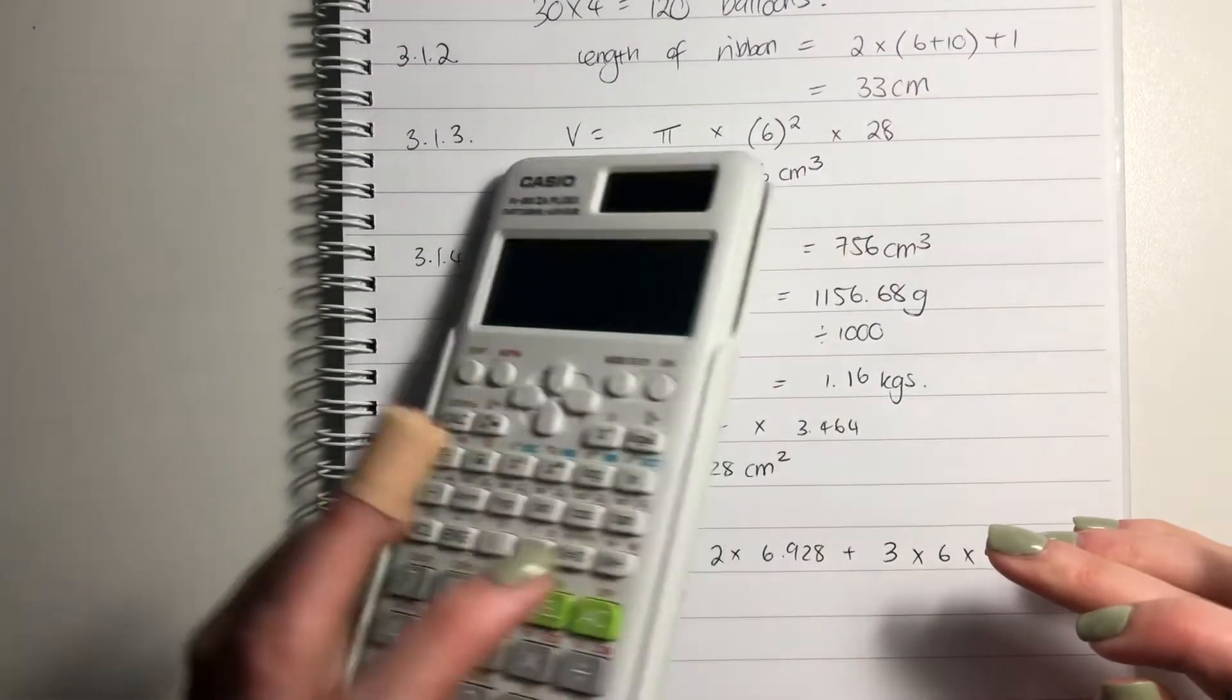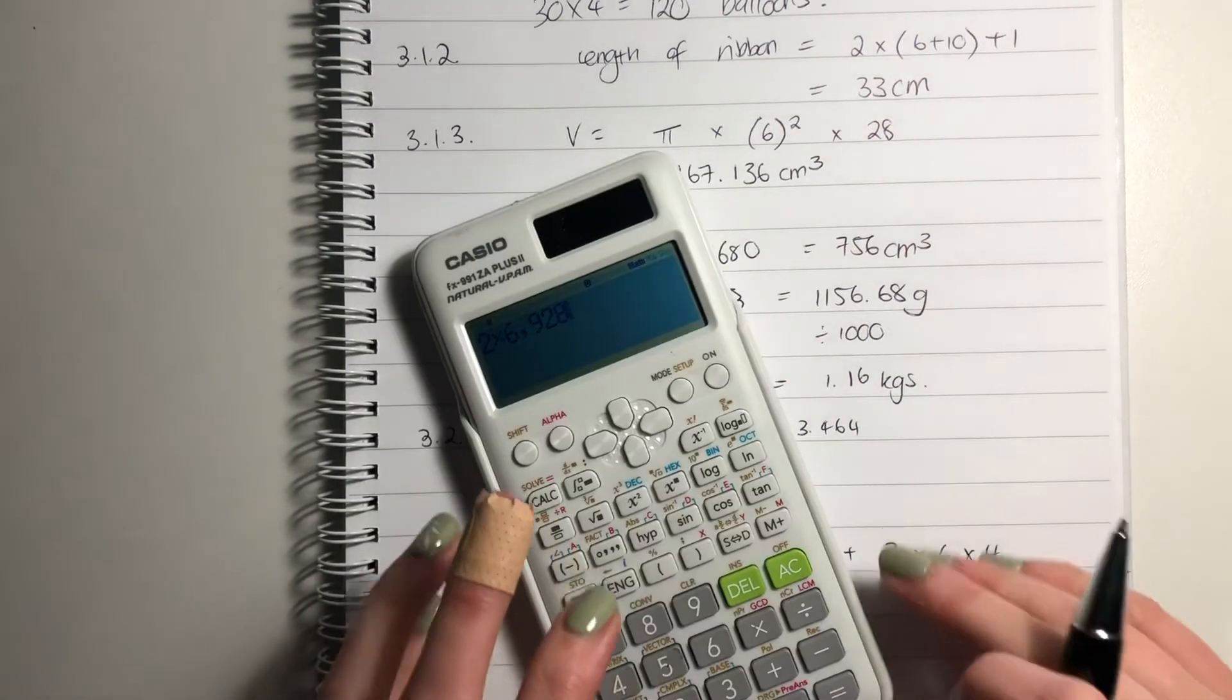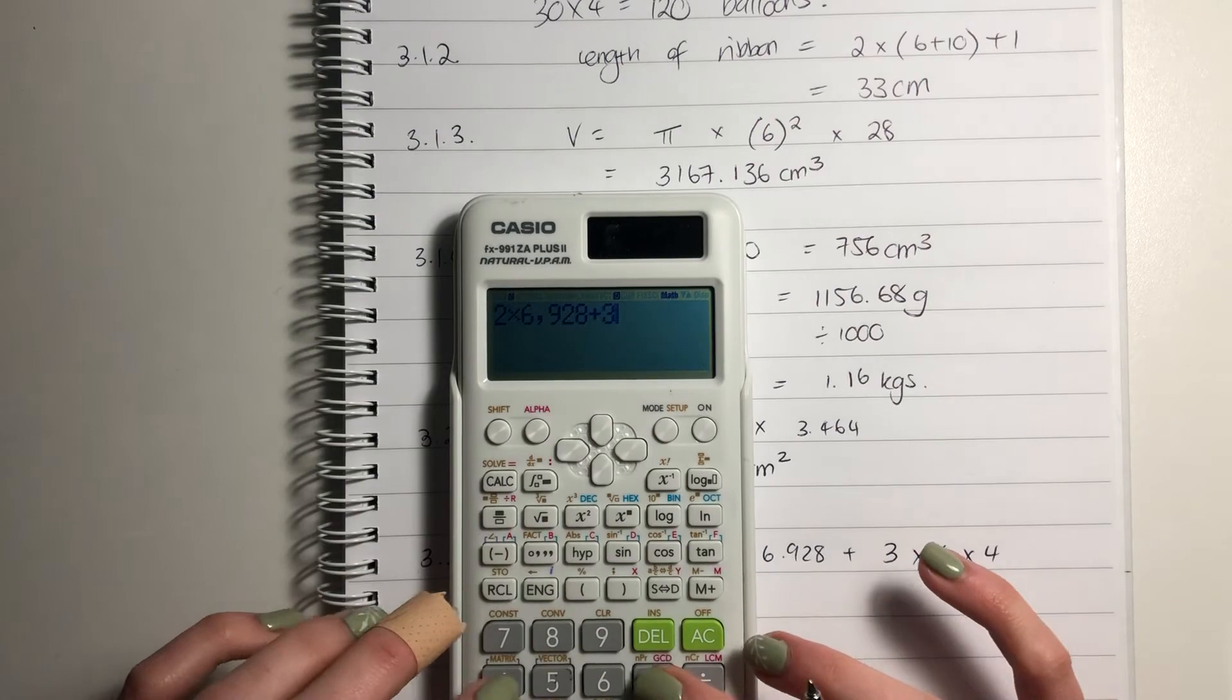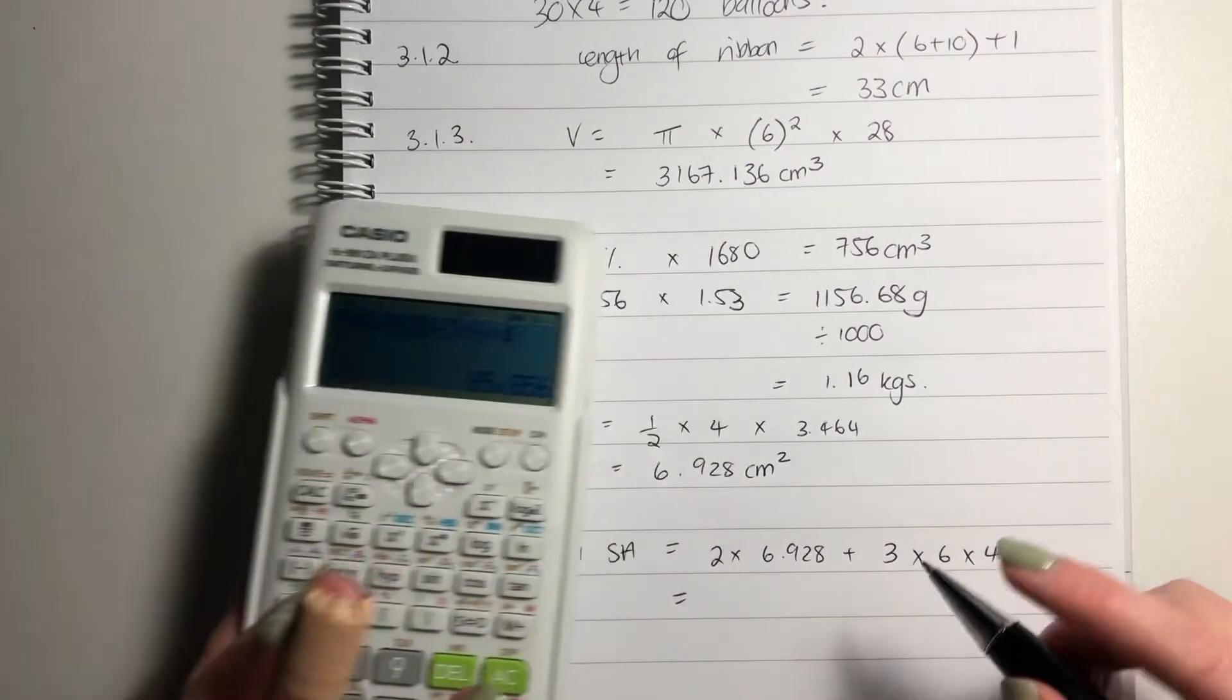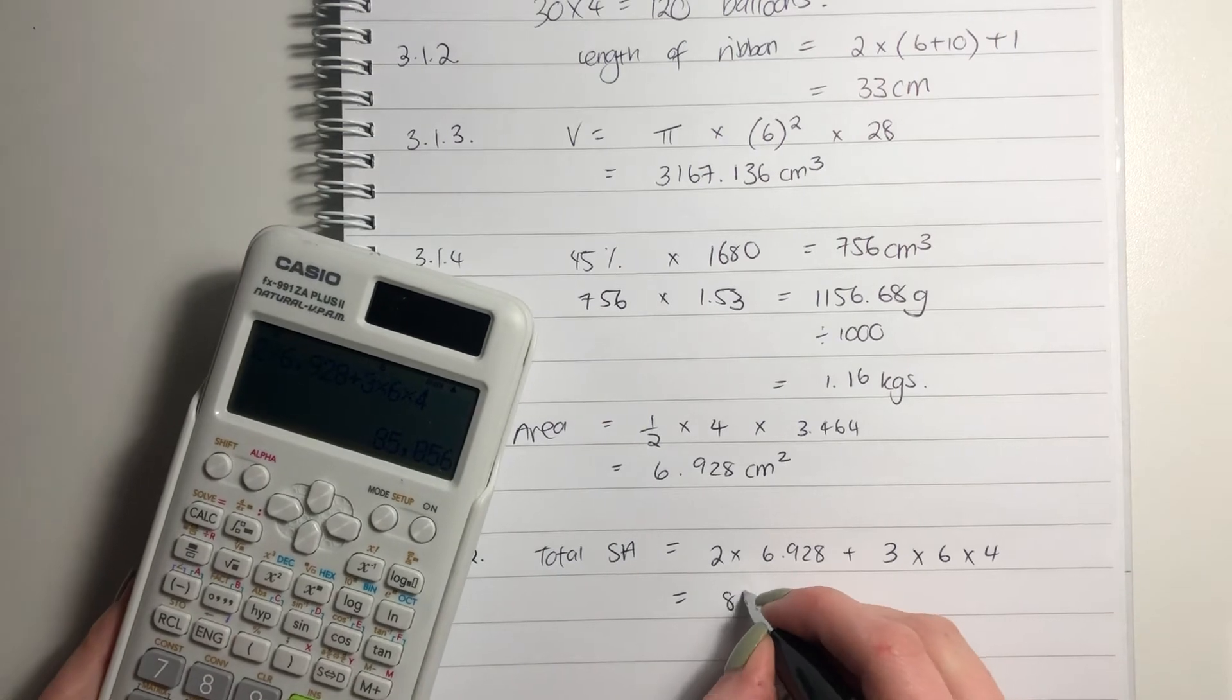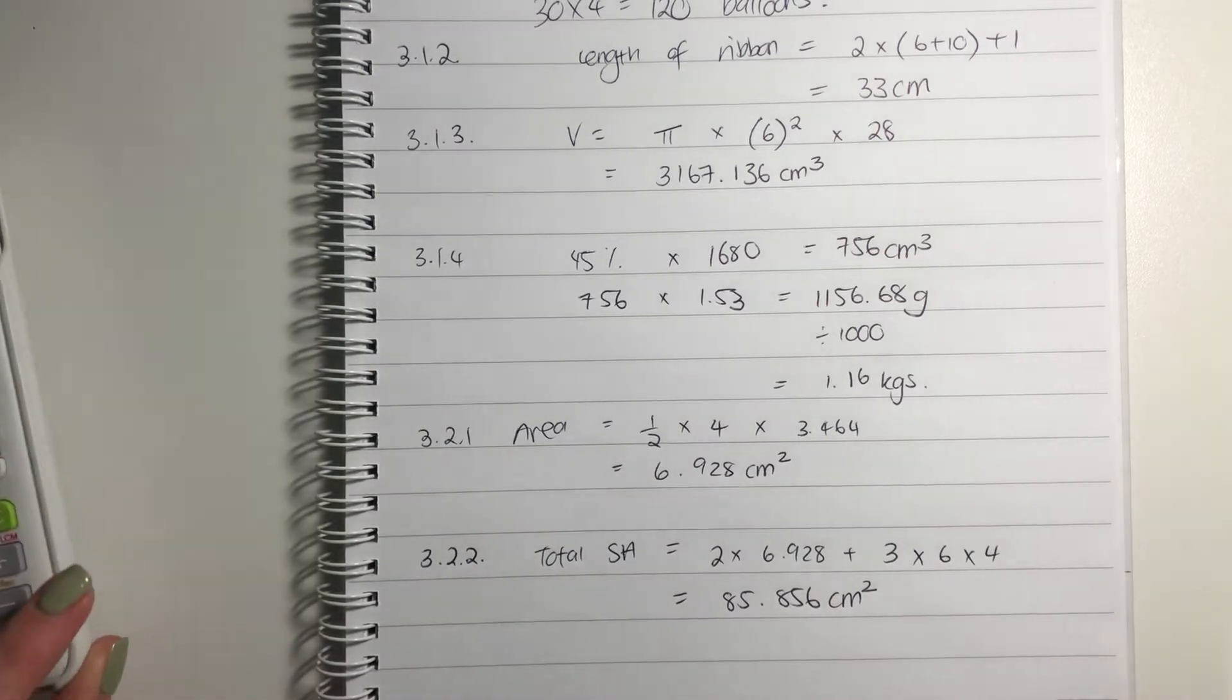Again, please make sure that you are putting your answer in here correctly, because it's very easy to put it in incorrectly and then kind of mess it up. So it's 85.856 centimeters squared. Okay.